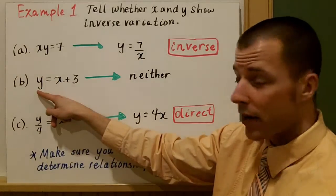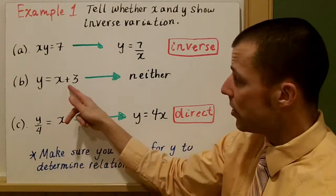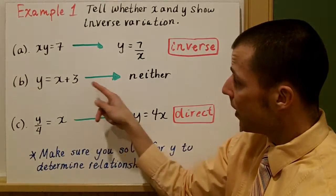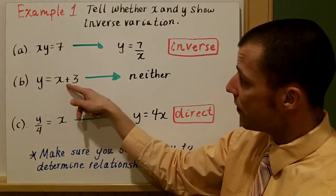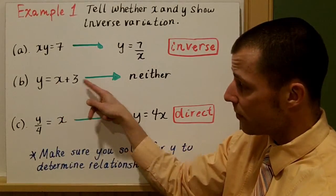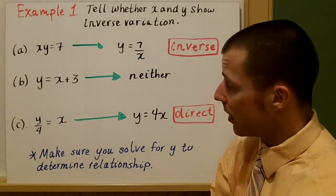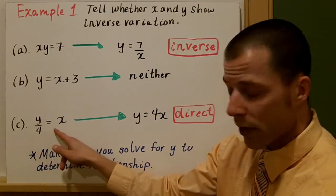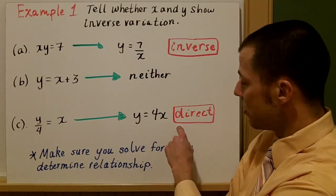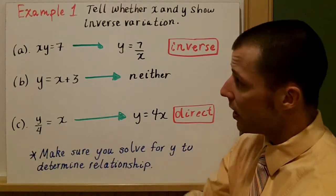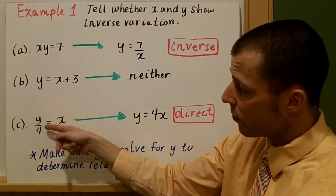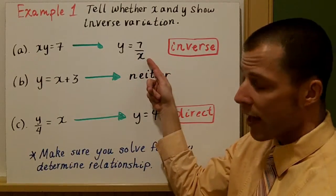The second example, y equals x plus 3, is a linear equation — this is neither direct variation because we have a y-intercept of 3, nor inverse variation because there's no division; it's not a over x. Anytime you have a linear equation in the form mx plus b, you won't have either variation type. Finally, y over 4 equals x: multiplying each side by 4 gives y equals 4x, which is direct variation.